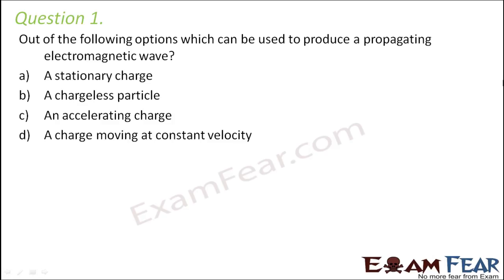Now let's look at the options. First option is a stationary charge. A stationary charge means the charge is at rest, so a charge at rest will only have an electric field — there will be no magnetic field. So this is not the correct option.